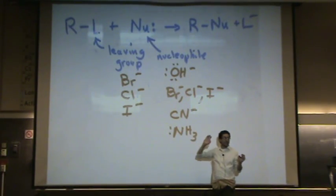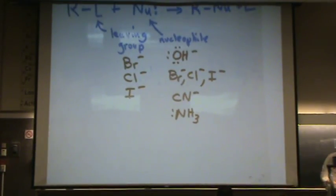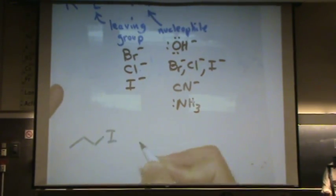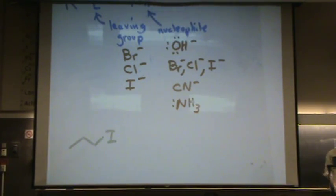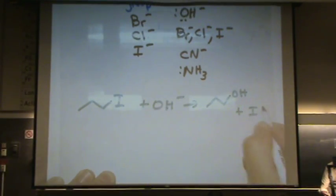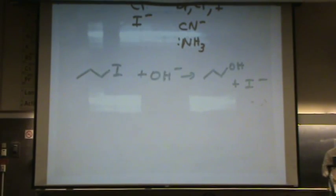The nucleophile — whatever has a lone pair on it — will work satisfactorily. For example, let's say we have 1-iodopropane. We add our nucleophile and it will just substitute. So I've now made an alcohol from an alkyl halide — I've made a new sort of functional group.